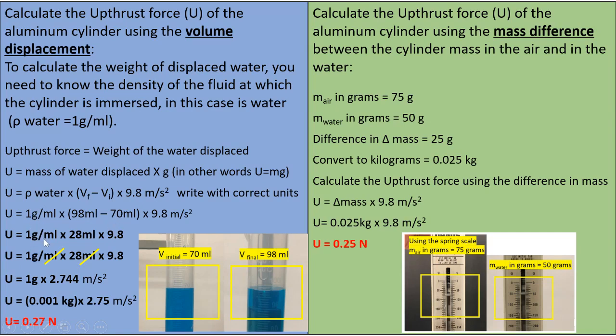So 1 gram per ml times 28 ml times 9.8 m per second squared. So cancel the ml. So we have 1 gram times 2.744 m per second squared.